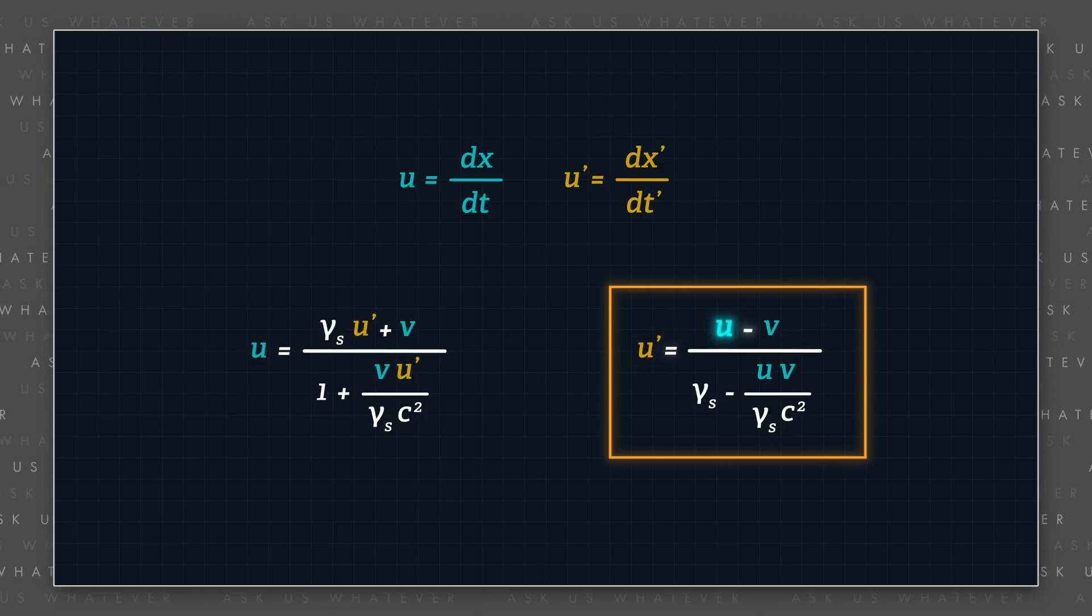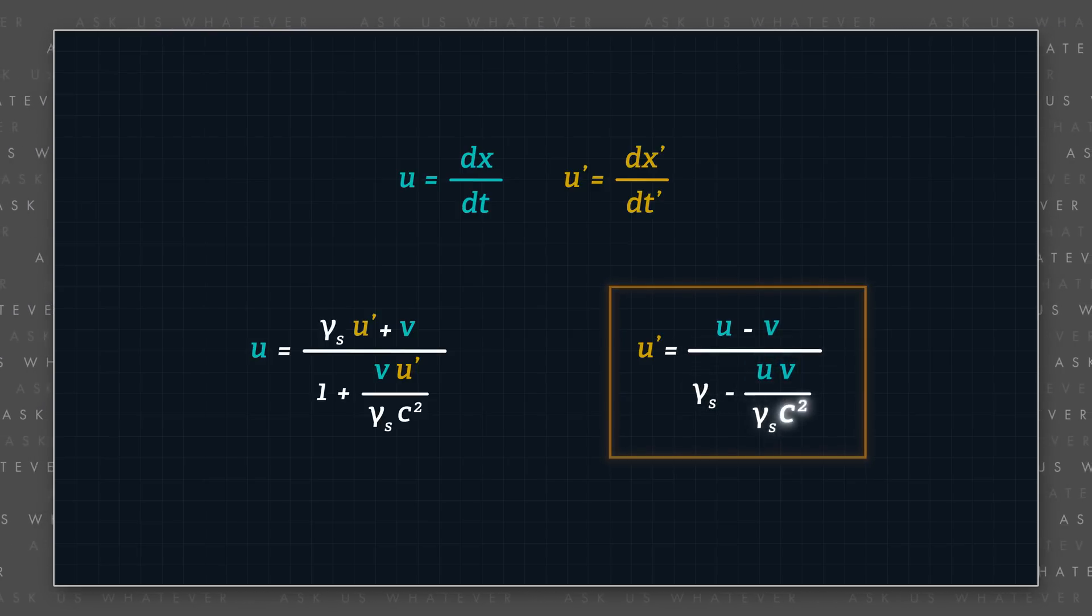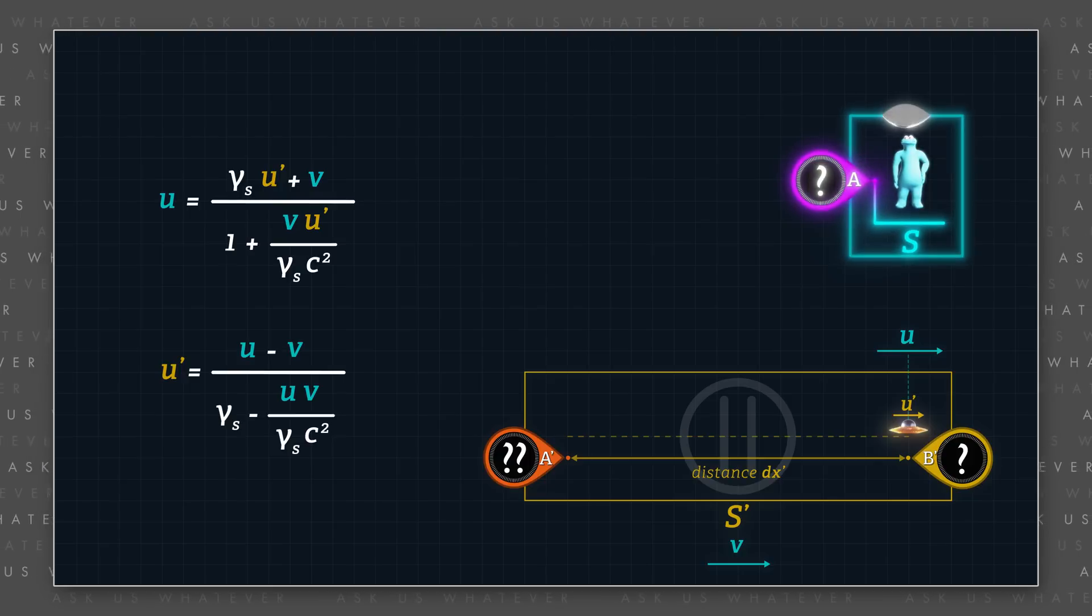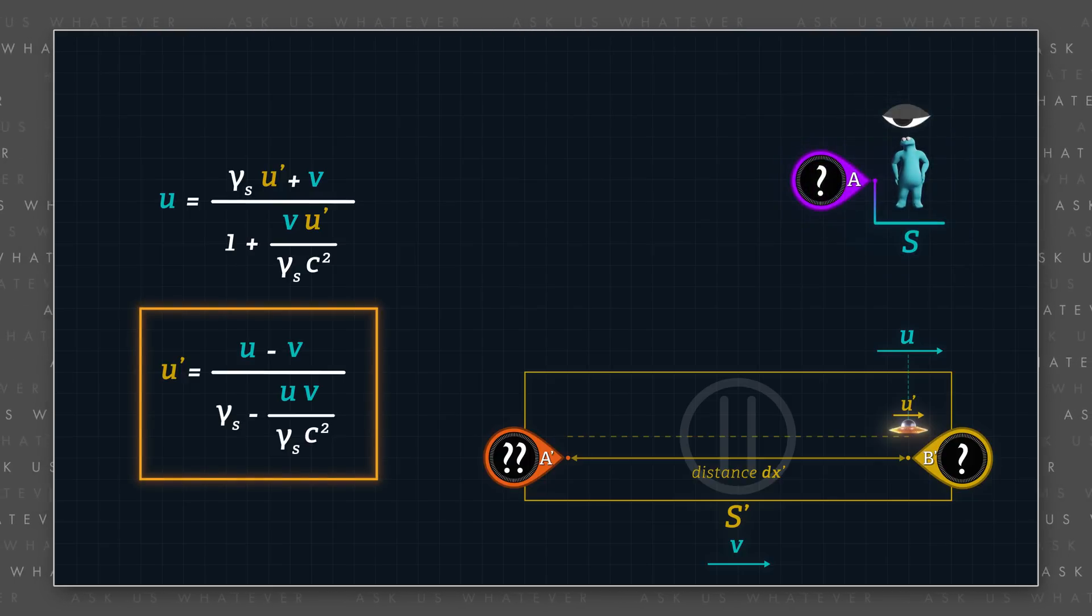u prime is equal to u minus v, all divided by gamma s minus u times v over gamma s times c squared. Note that both u and v are measured using a single clock in frame s, and so this formula does not require the synchronization of clocks in frame s.